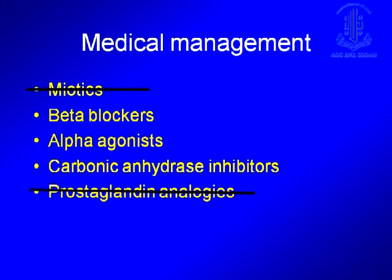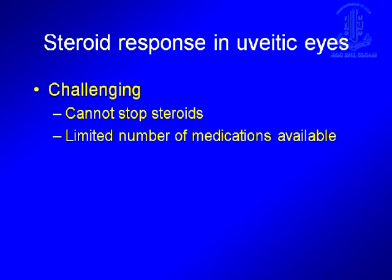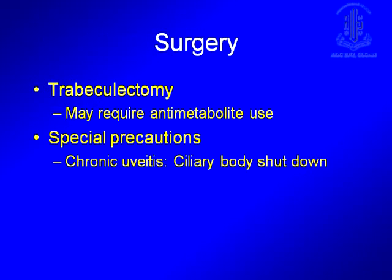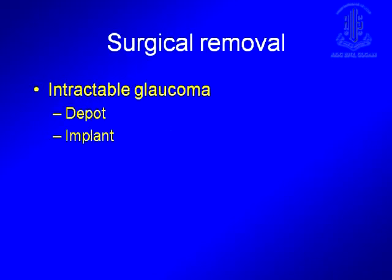Even in medical treatment, you cannot use miotics and you cannot use prostaglandin analogues, so you have to make do with one of three remaining options. As a result, you very often end up having to do surgery. Surgery is pretty much routine except that when you use trabeculectomy, you need to use anti-metabolites. You also need to be careful about ciliary body shutdown, and you may need to consider removing a steroid depot if you think that is the cause for the intractable glaucoma.